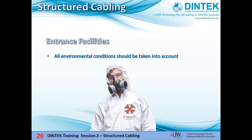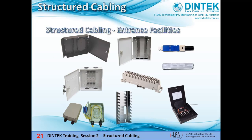All environmental conditions should be taken into account — stuff like gas or exhaust fumes getting in, heat, and adequate ventilation. Here's some typical equipment you might expect to find in an entrance facility: cabinets and enclosures, chrome blocks and mounting brackets, and optic fibre equipment.